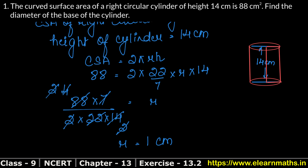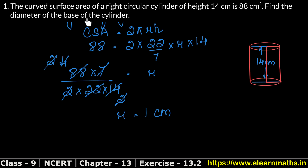Now, what did we get from the question? We had to find the diameter of the base of the cylinder. The diameter is 2R. So that means 2 into R's value of 1.